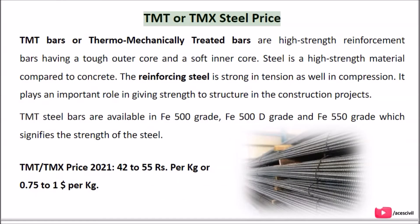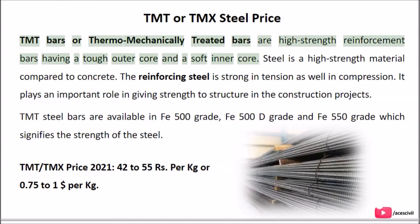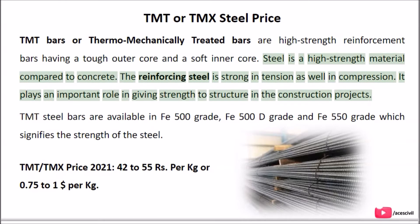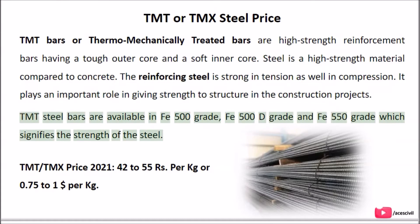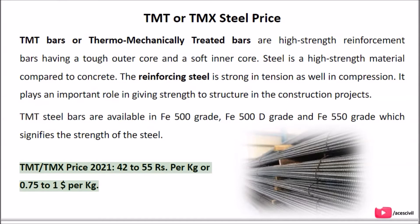TMT or TMX Steel Price: TMT bars, or thermo-mechanically treated bars, are high-strength reinforcement bars having a tough outer core and a soft inner core. Steel is a high-strength material compared to concrete. The reinforcing steel is strong in tension as well as in compression, and plays an important role in giving strength to structures in construction projects. TMT steel bars are available in FE500 grade, FE500D grade, and FE550 grade, which signifies the strength of the steel. TMT/TMX Price 2021: Rs. 42 to 55 per kg, or $0.75 to $1 per kg.